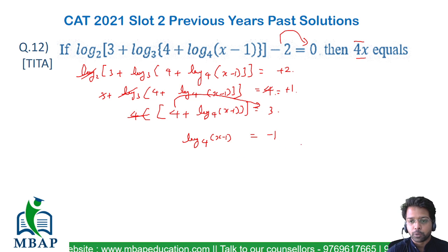Let's remove log base 4. This becomes x - 1 equals 4 raised to minus 1.